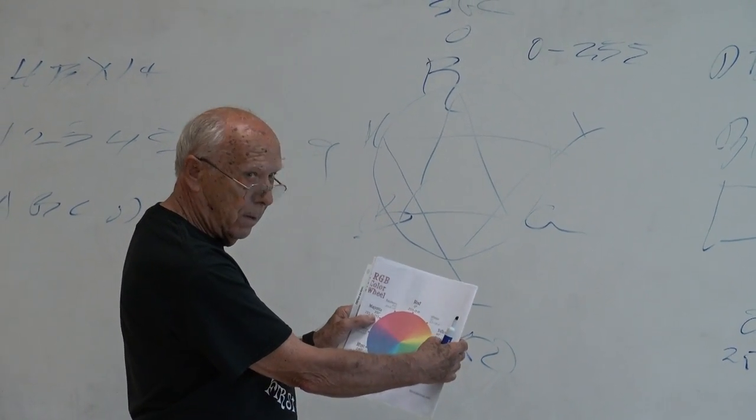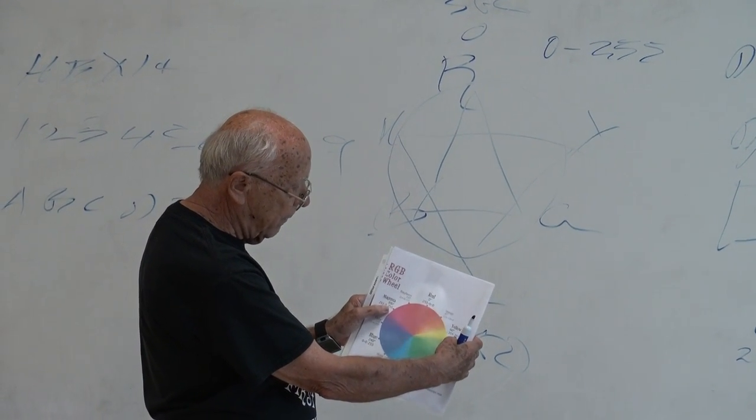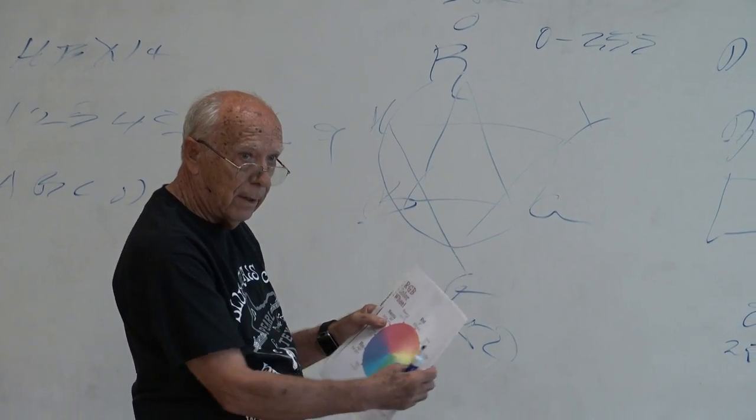It's cyan, magenta, and yellow. There's 255, 255, zero. That is yellow.